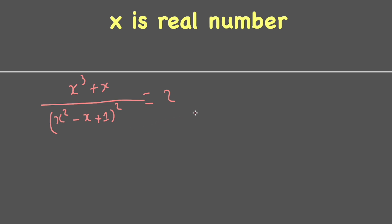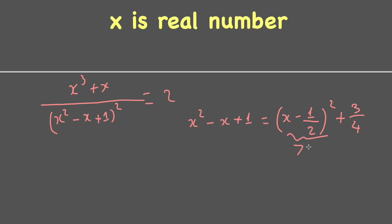It's easy to prove this. We can show that x² - x + 1 equals (x - 1/2)² plus 3/4, which is always greater than or equal to 3/4 — meaning the denominator is always greater than 0 for any real x.